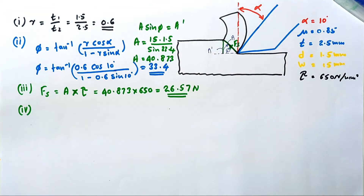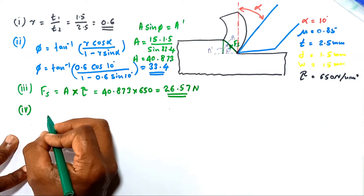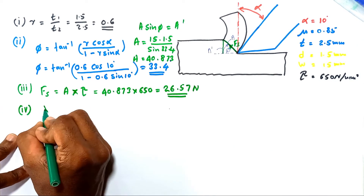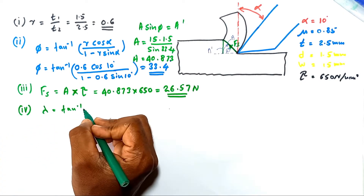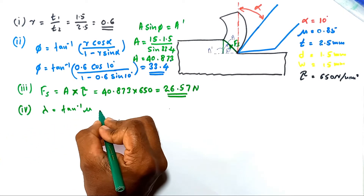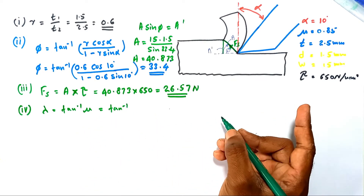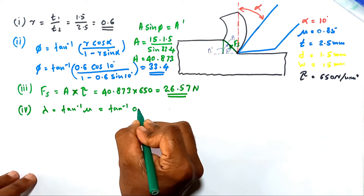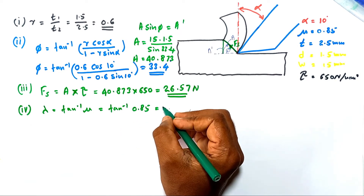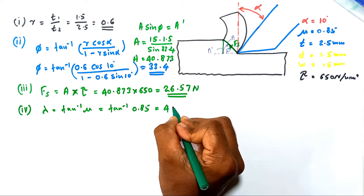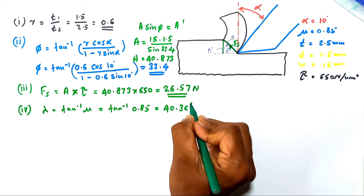The fourth part asks for the friction angle λ. The formula is λ = tan⁻¹(μ). Since μ = 0.85, we get λ = tan⁻¹(0.85) = 40.36°.